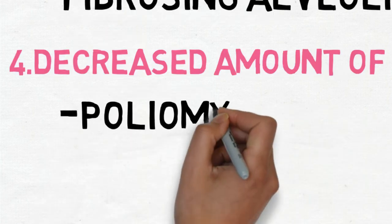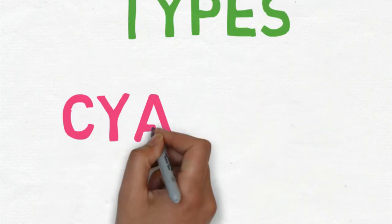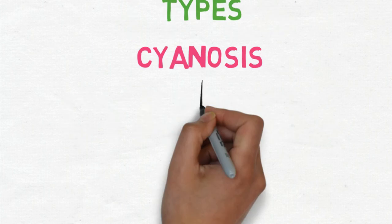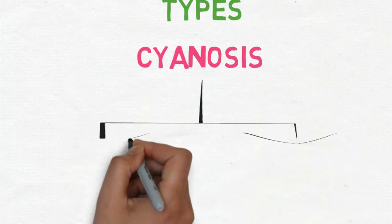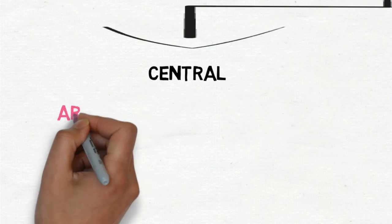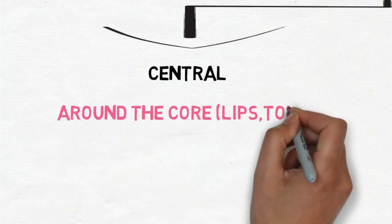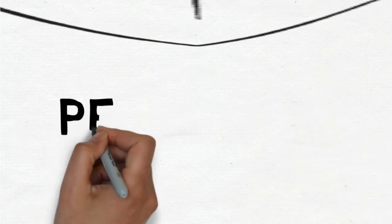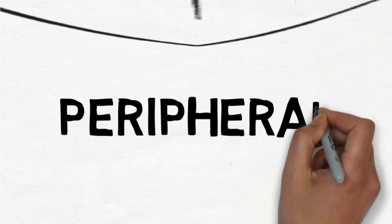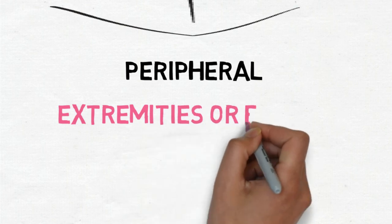Number four: decreased amount of air ventilation in the lung. This can occur in poliomyelitis. What are the types of cyanosis? There are two types basically: number one is central cyanosis, which is seen around the core of the body like lips and tongue. Another is peripheral type of cyanosis, which is seen in extremities or fingers.